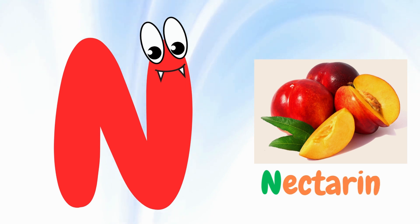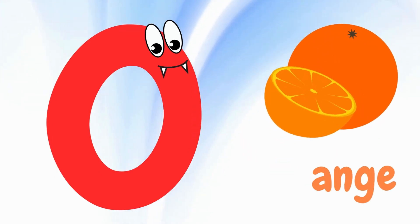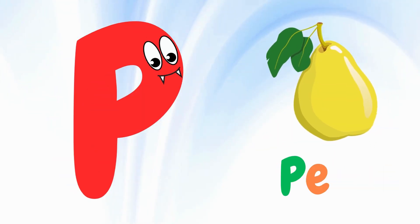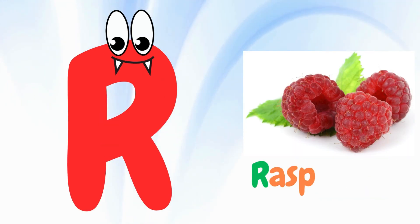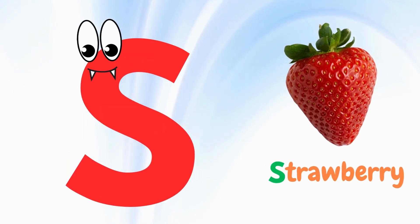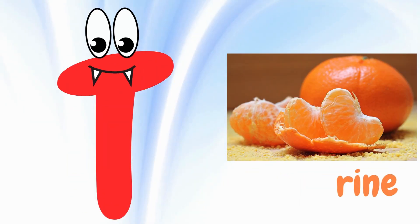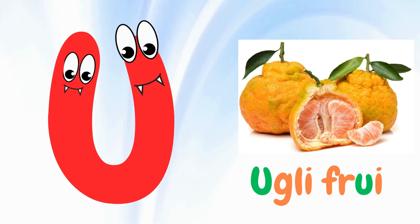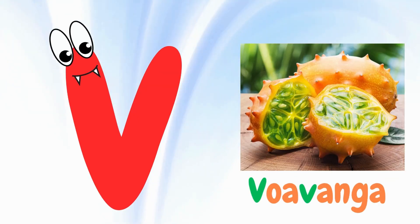N for nectarine, O for orange, P for pear, Q for quince, R for raspberries, S for strawberry, T for tangerine, U for ugly fruit.